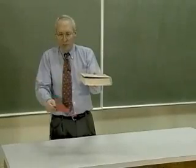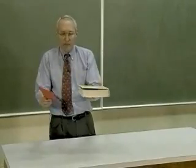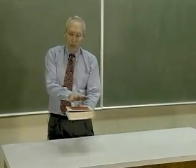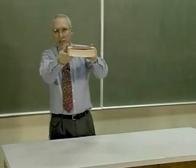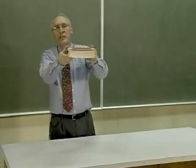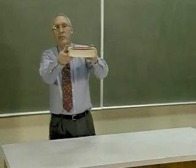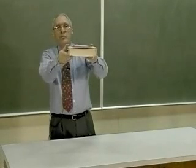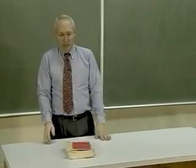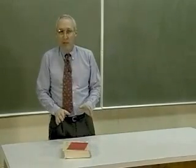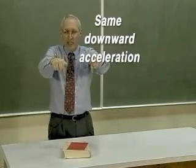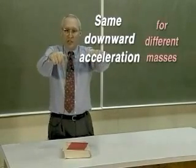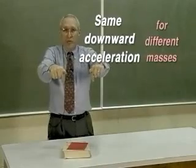If air friction is a problem, you can fix that in the following way. If you put the paper on top of the book and allow the book to run interference for the piece of paper, so that the air friction on the piece of paper is now insignificant, then you observe that both objects hit the ground at the same time — which is to say both objects accelerate downward with exactly the same acceleration, which does not depend upon the mass, since they have quite different masses.